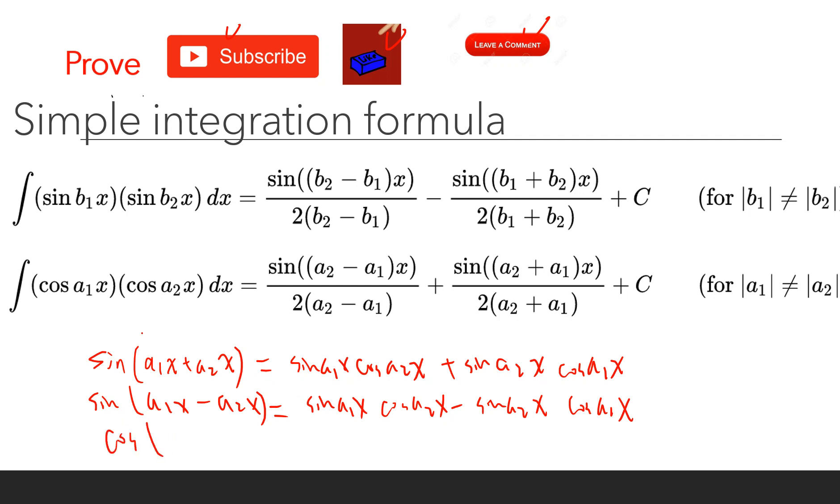We also have the cosine one. Cosine(a1x + a2x) is cos(a1x)cos(a2x) minus sin(a1x)sin(a2x). And we have cos(a1x - a2x) equals cos(a1x)cos(a2x) plus sin(a1x)sin(a2x).